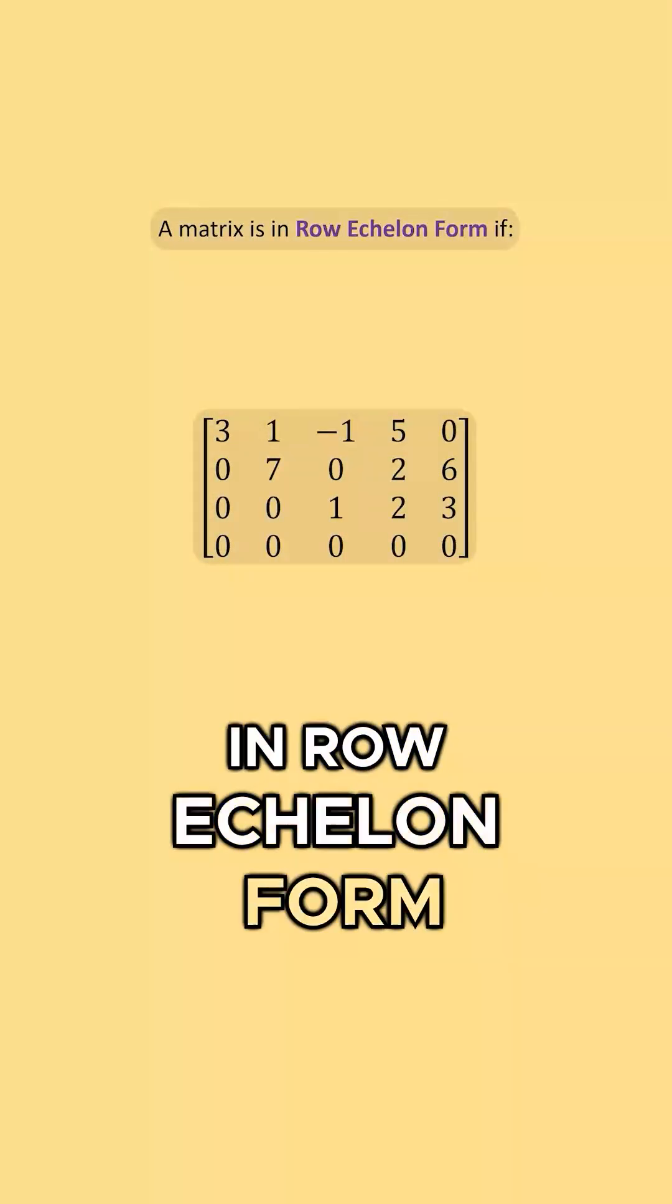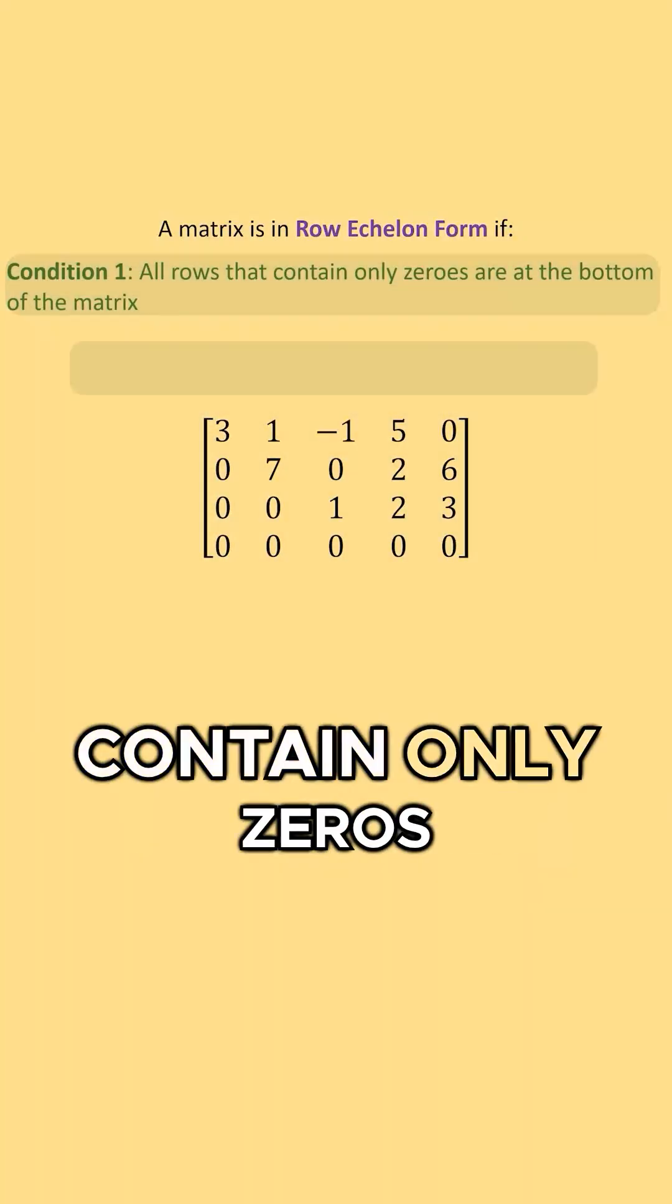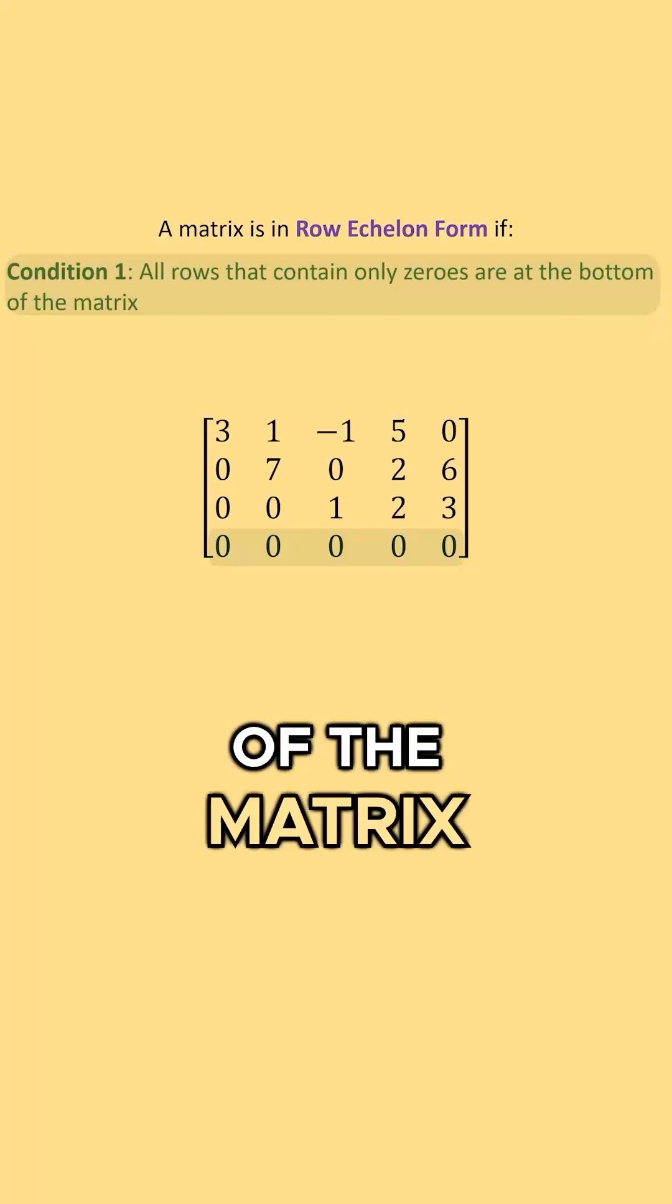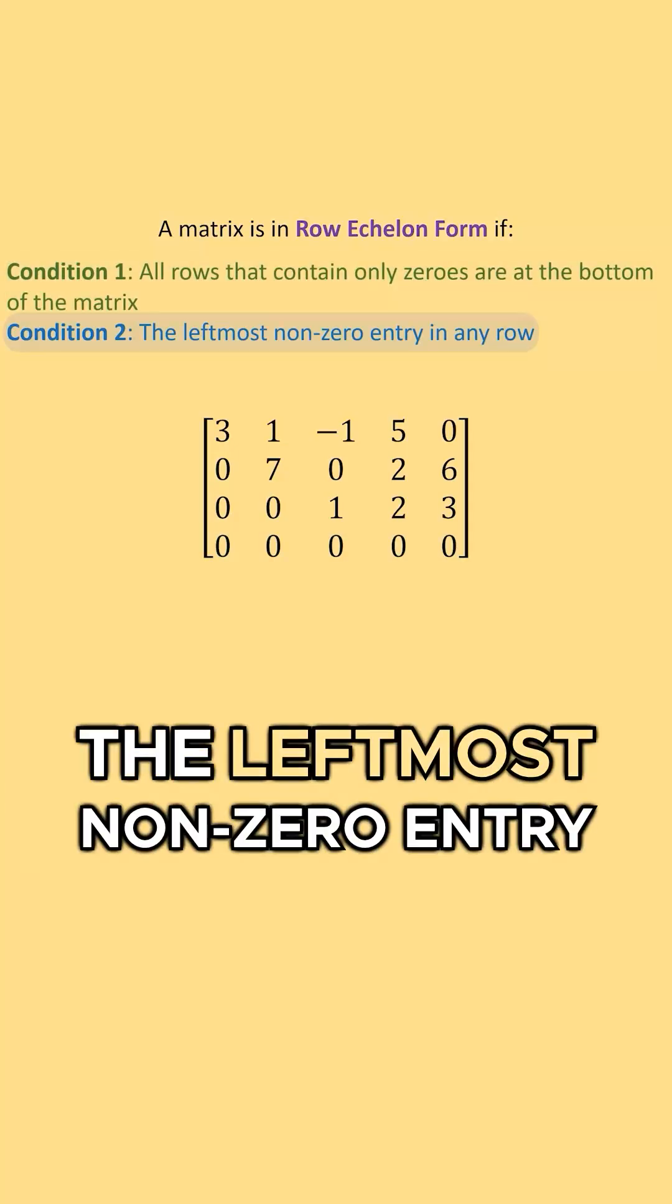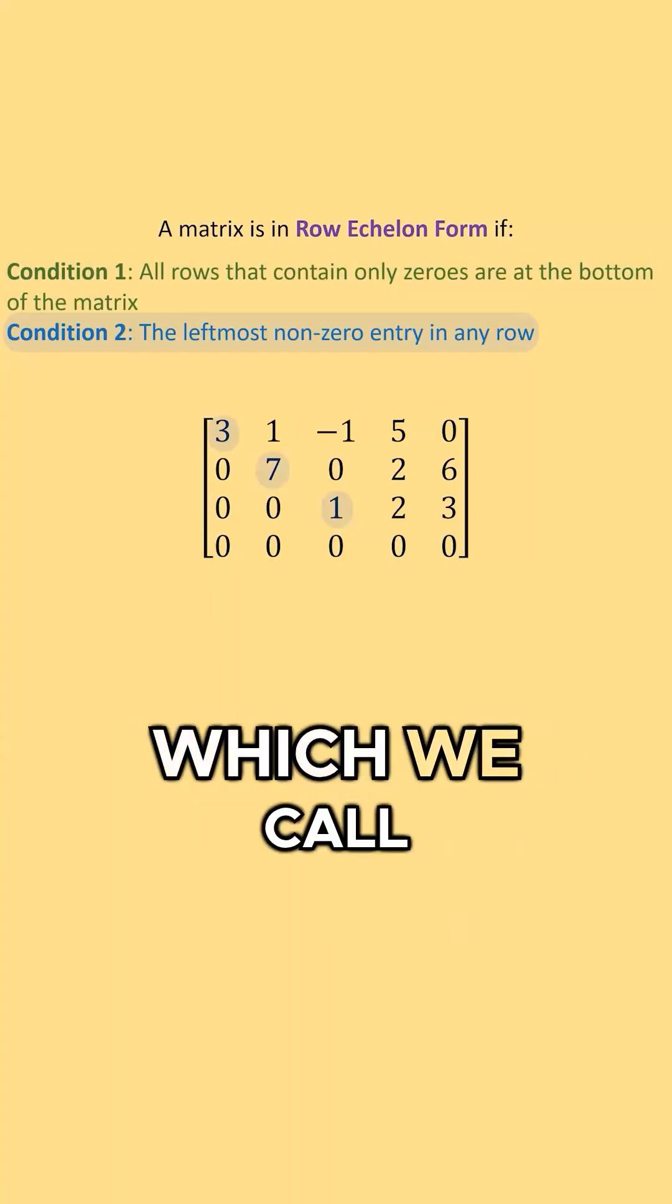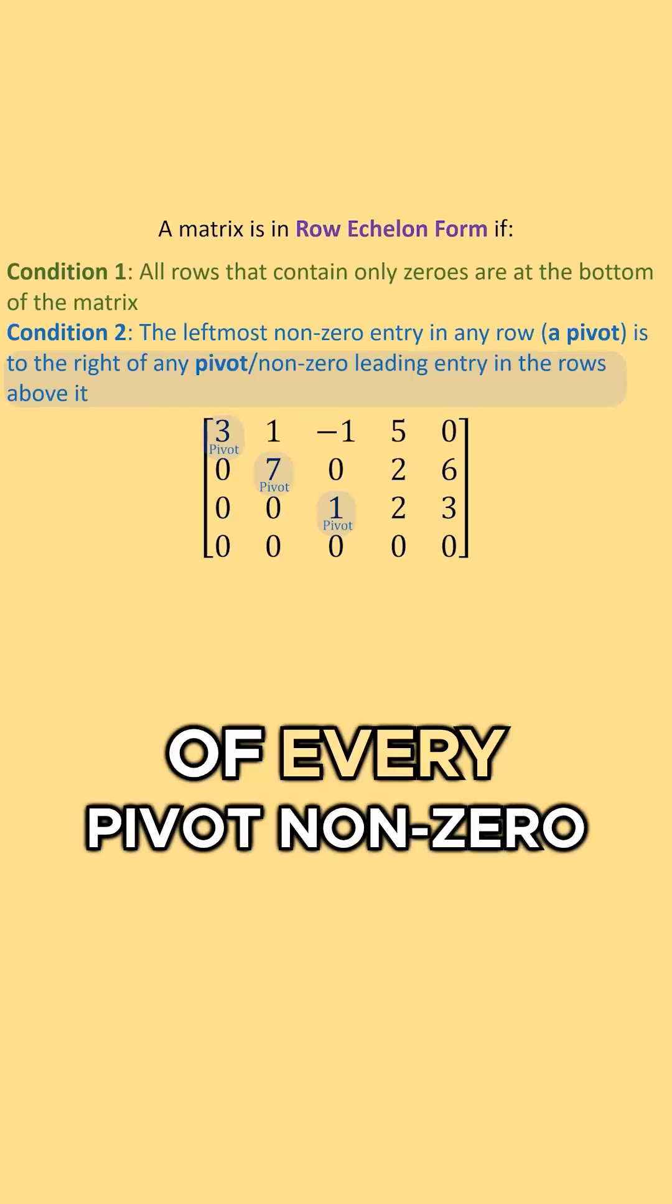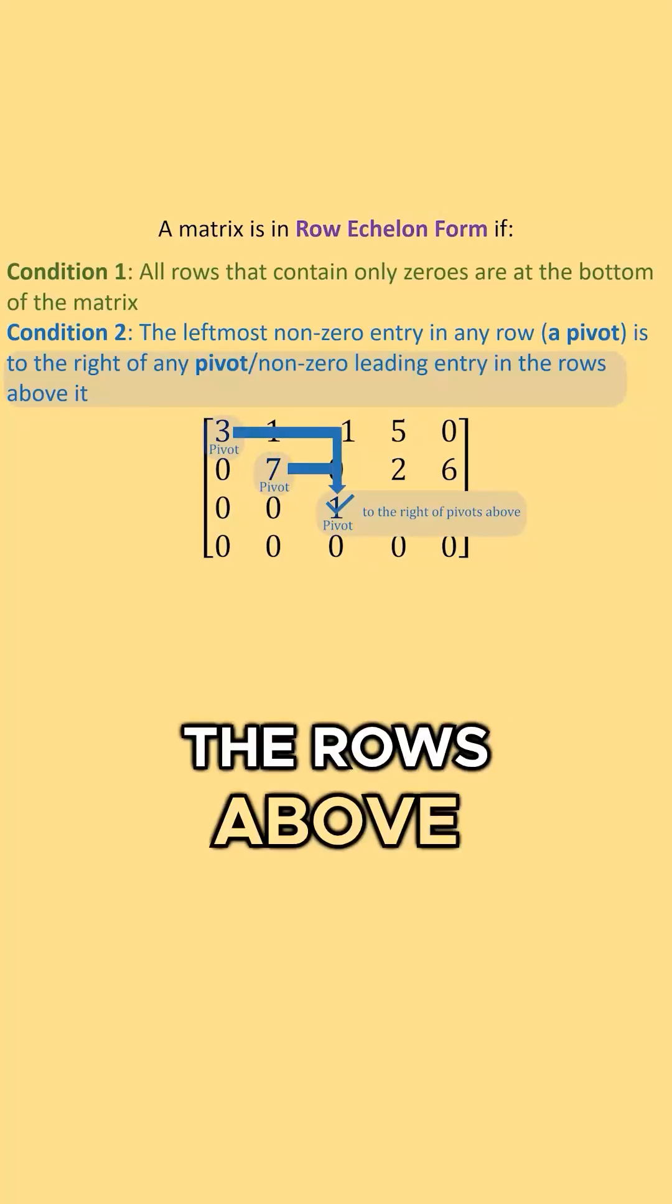A matrix is in row echelon form if all rows that contain only zeros are at the bottom of the matrix. Also, the leftmost non-zero entry in any row, which we call the pivot, is to the right of every pivot or non-zero leading entry in the rows above it.